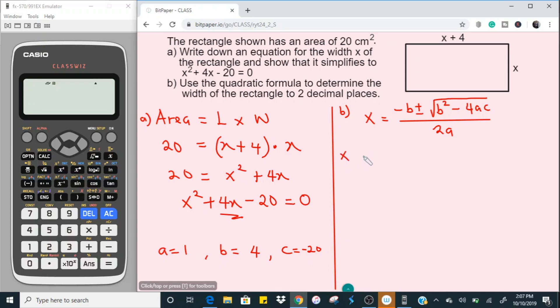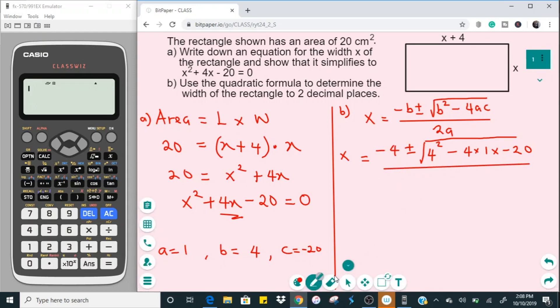So to simplify, x will be equal to minus b, and we know b to be 4, so this is going to give us minus 4 plus or minus, then b squared—b is 4 so it becomes 4 squared—minus 4 times a, and a is 1, times c, and we know c to be minus 20. Don't forget to put your square root sign over all of them, and of course this is 2 times a, or that's 2 times 1.